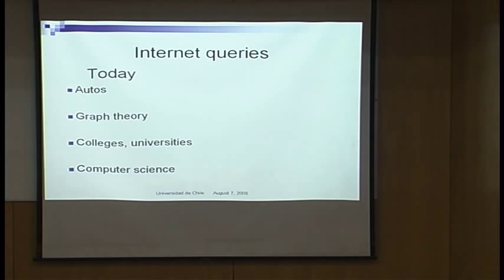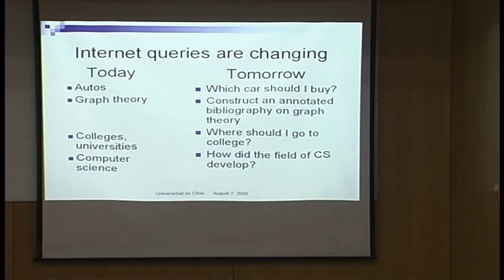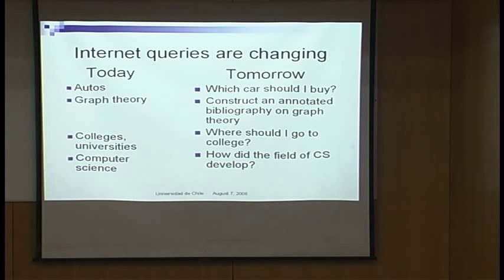Today, if you use Google and want to buy a car, you type in 'auto' and get 50 pages to search through. But Google is only the tip of an iceberg — the way we search is going to change drastically. Tomorrow, you'll say 'which car should I buy?' and get a reasonable answer. Or you'll say 'construct an annotated bibliography on graph theory' — you won't have to look through all those papers; you'll get the key ones and their major content. The system might tell you how the field of computer science developed, who the key researchers were, and what institutions they were at.